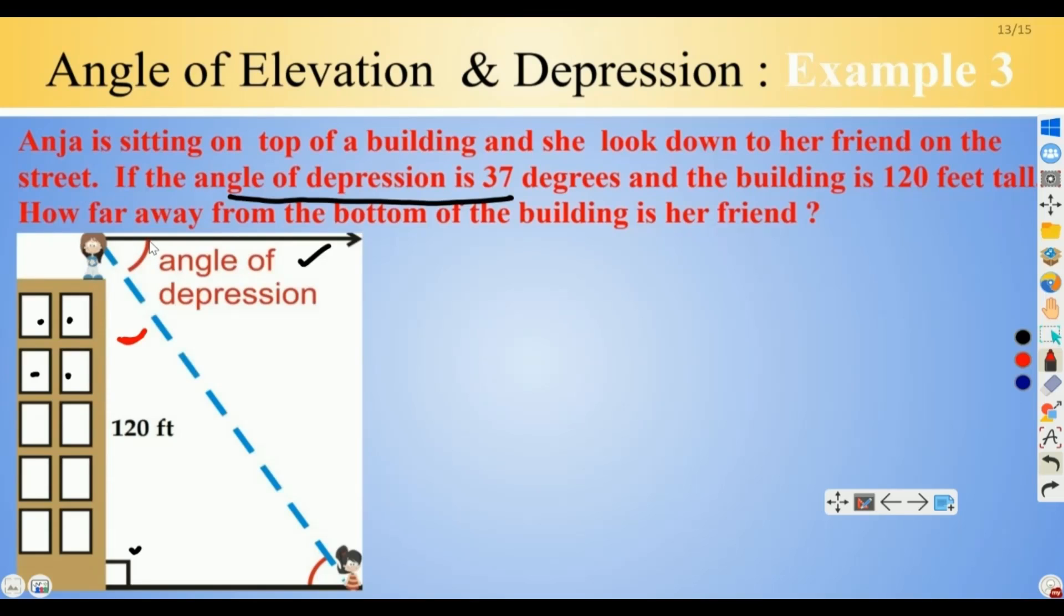The thing you want to be very careful about with an angle of depression problem is always draw in the horizontal line, because until you do that, you can't really figure out which one is the angle of depression.